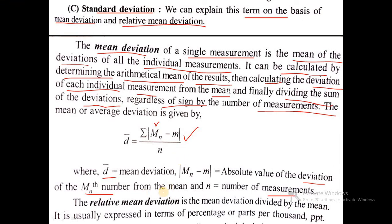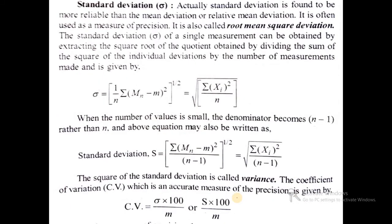In the case of relative mean deviation, it is the mean deviation divided by the mean. It is expressed as a percentage, parts per thousand, or parts per million. Standard deviation is found to be a more reliable term than mean deviation and relative mean deviation.